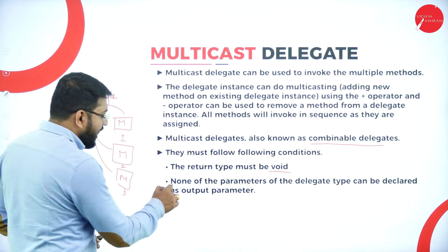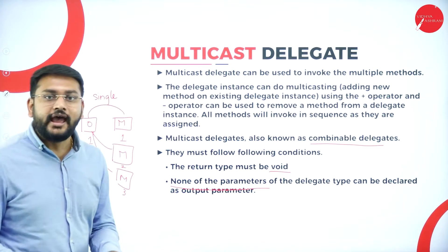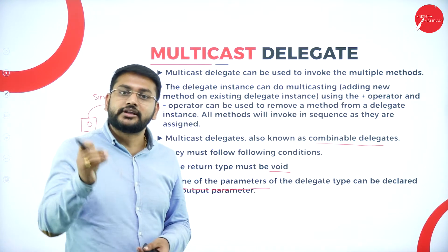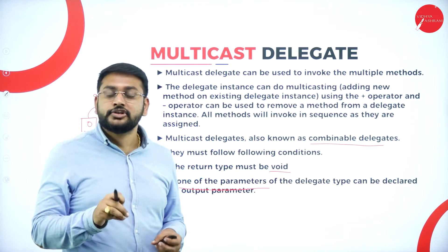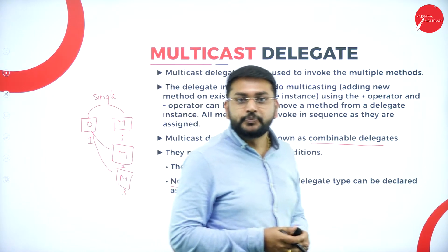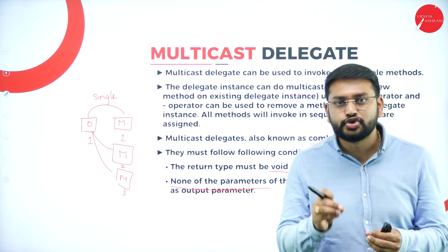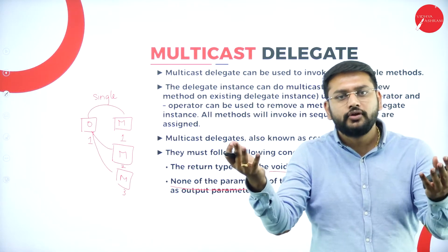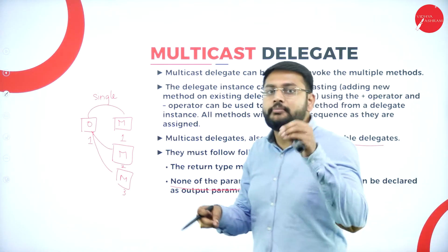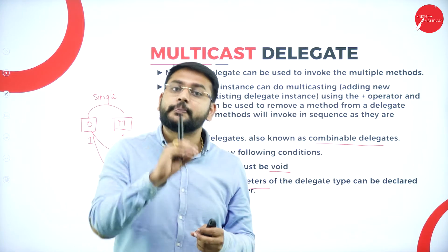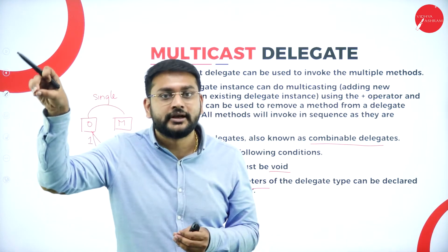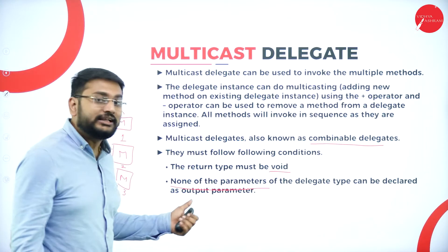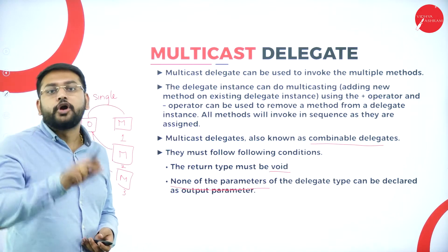It's also most important that none of the parameters of delegates can have an output parameter. An output parameter is where you are sending out a value from the method through the parameter to outside the method. But when it comes to the multicast delegate, you are not supposed to use output parameters.